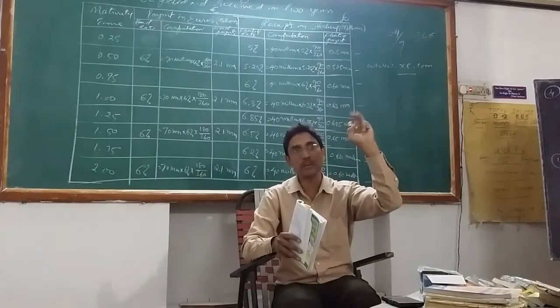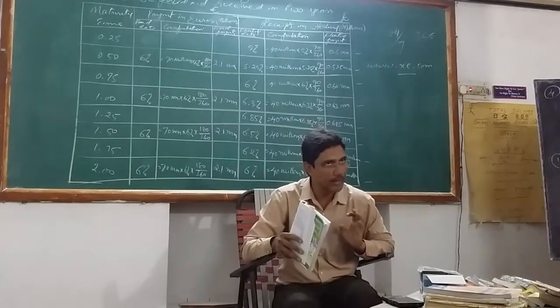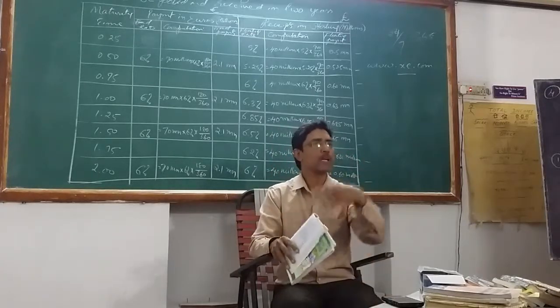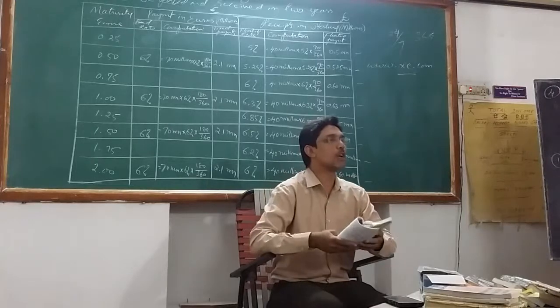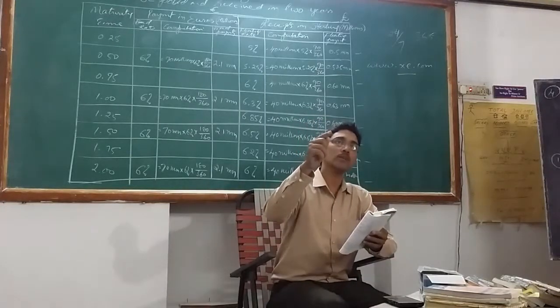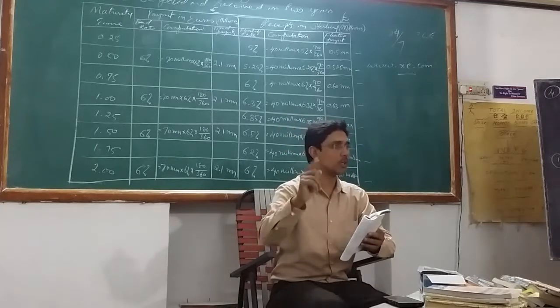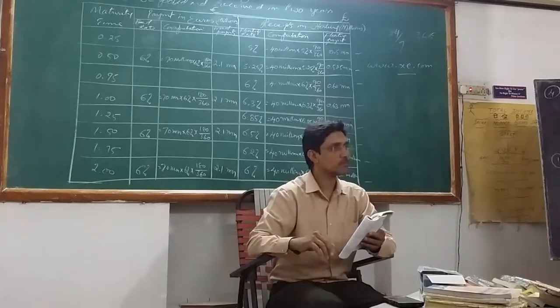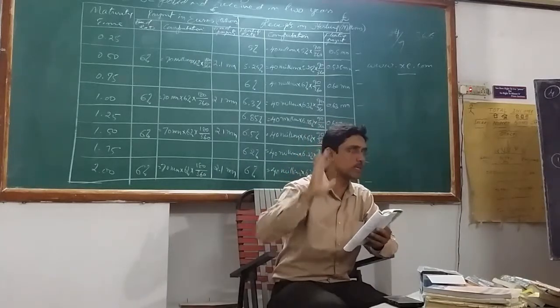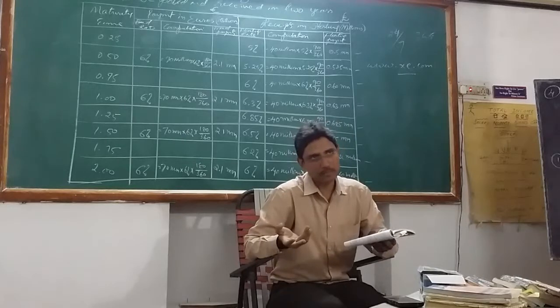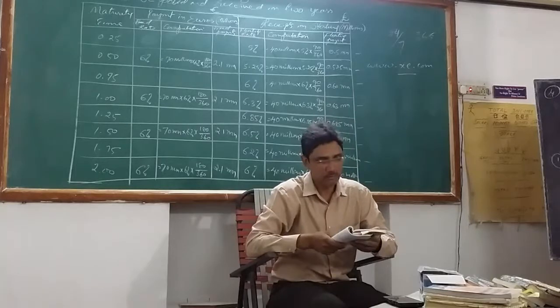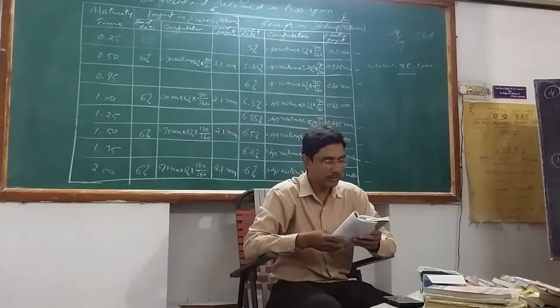One problem I have solved and two problems you people have solved after my explanation. Today also, first you do one thing: first page you leave, second page onward you have to prepare schedule numbers. What schedules you have to prepare? Schedule 13 Interest Earned, Schedule 14 Other Income, Schedule 15 Interest Expended, Schedule 16 Operating Expenses, then PNC. If the items are there, then you are supposed to prepare PNC, otherwise you leave it. Now let's start, get ready.